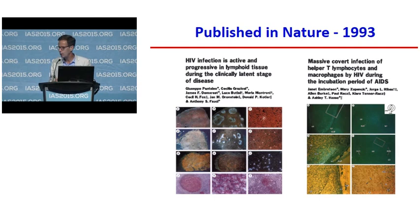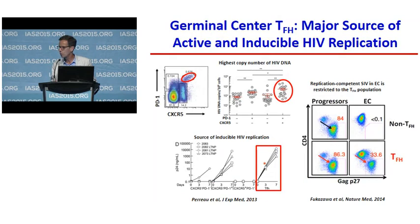In addition, if you take long-term non-progressors and try to stimulate virus, it is the T follicular helper cells that are the major source of replication-competent virus. More recently, in work from Lewis Picker's lab and Jeff Lifson's lab, it was shown that in elite controller monkeys, T follicular helper cells were really restricting virus replication.